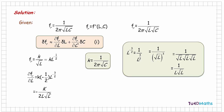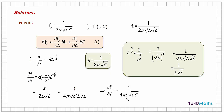Since k = 1 over 2π√C, substituting back and rearranging by bringing L to the front, we get ∂f/∂L = −1 over 4πL√(LC).